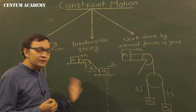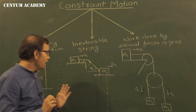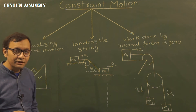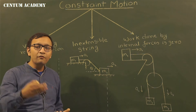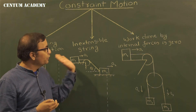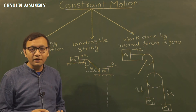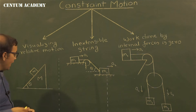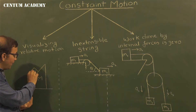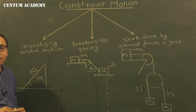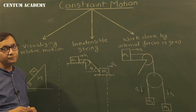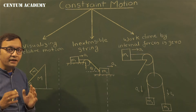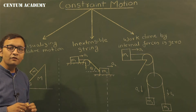You can use any of these three approaches to find the constraint relation — it is up to you to pick the appropriate one. In this section we will deal with all three, taking one example each. In the next video, we will have a set of problems to best utilize these three methods. Let us first take the example for visualizing relative motion: a mass small m is kept on a wedge of mass capital M.